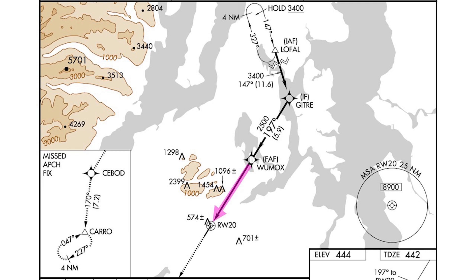If an approach like this procedure has published LPV minimums, then your system must use WAAS and be approved to fly the tighter, angular course that narrows like a localizer as you approach the runway. The avionics and displays also must be able to show the approved vertical guidance, a glide path that mimics an ILS glide slope. In other words, the RNP APPROACH note states what's been true for years.